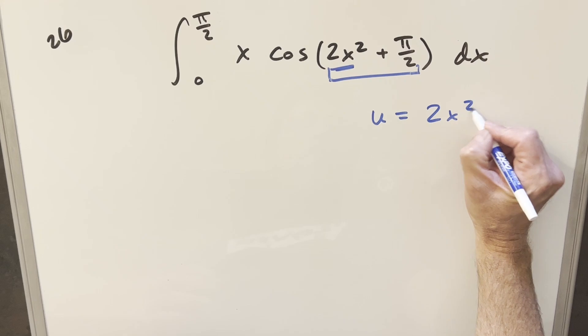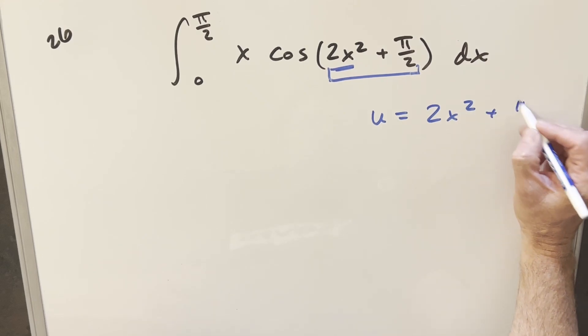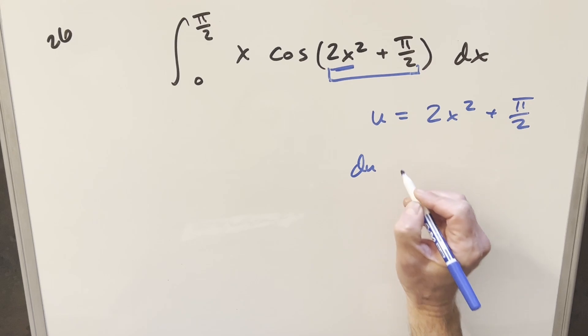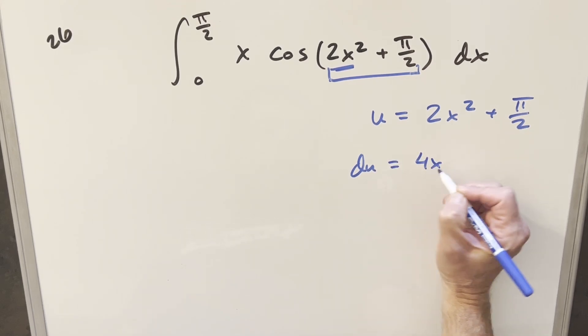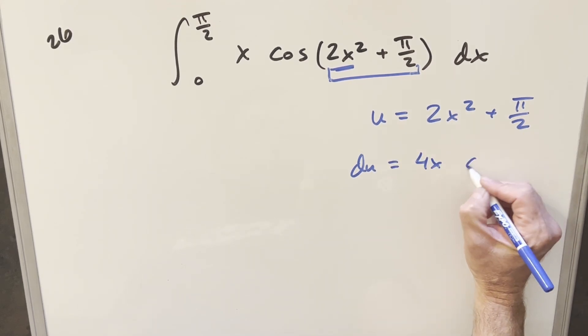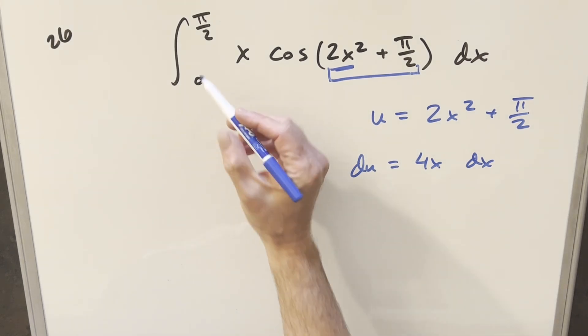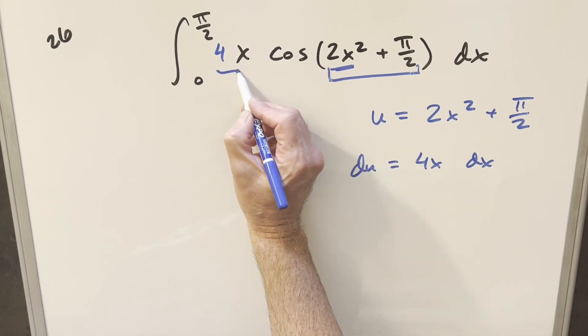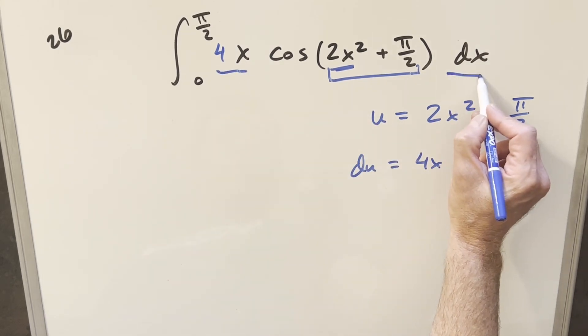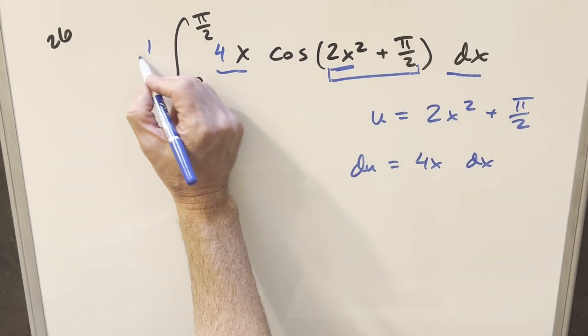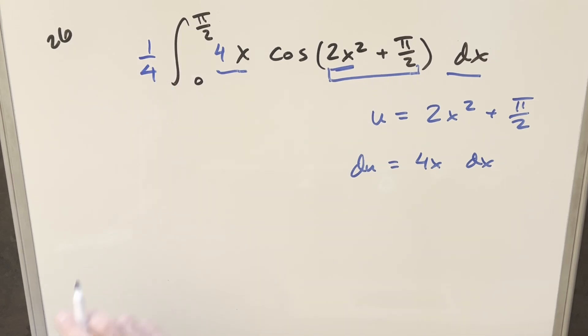So I'm going to set my u equal to 2x squared plus pi over 2. Taking the derivative on this, our du value is going to be 4x. The derivative here is just 0, and we'll have a dx on the end. Now in order to set up this u sub, we already have the x here. If I just multiply in a 4, then we have 4x dx right here. I don't want to change it, so let's multiply by 1 over 4 in front.